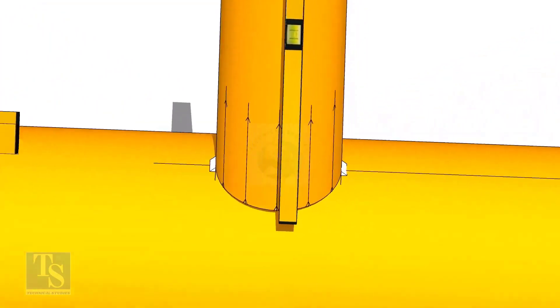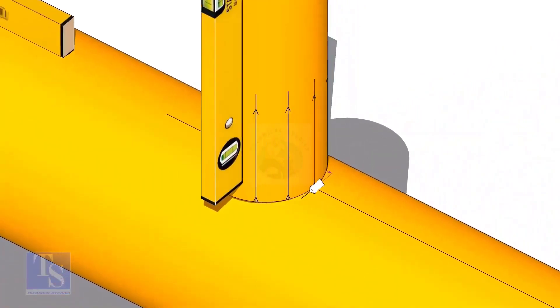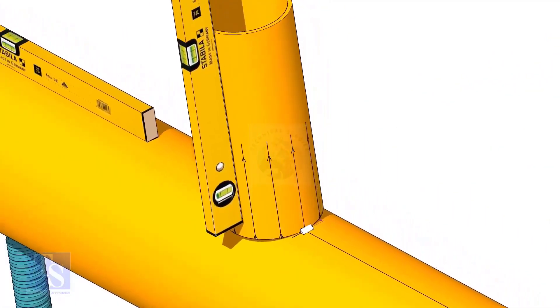Now make sure the pipe header and the branch are horizontally and vertically level. If required, strengthen the tack weld.